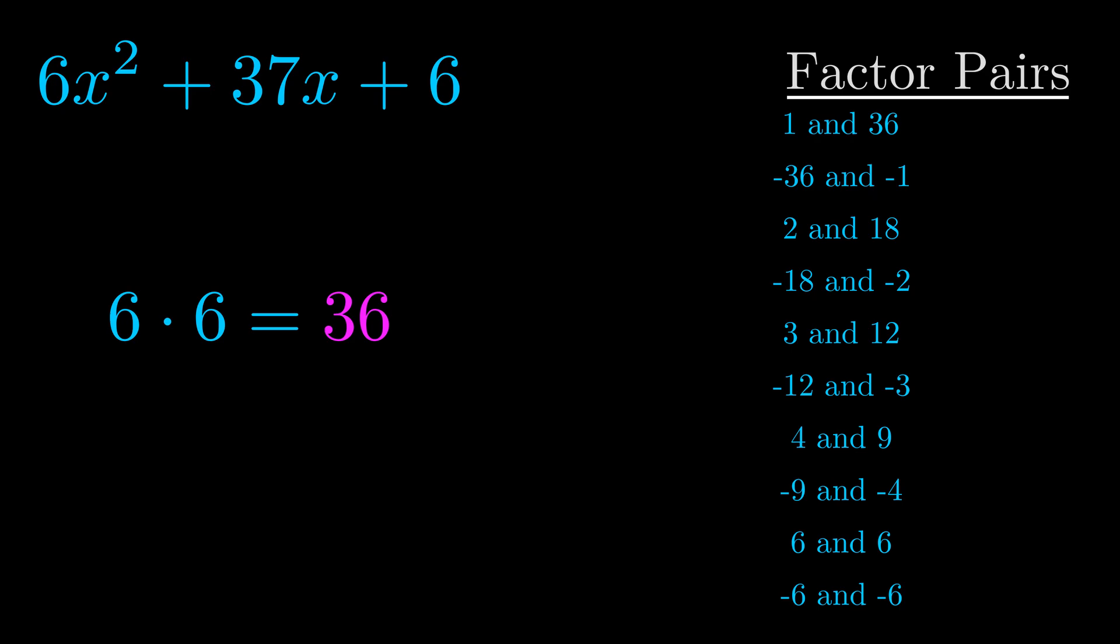The b value is the coefficient on the x term. That's the middle term, the one that we haven't done anything with yet. And really this is the only factor pair that we need.